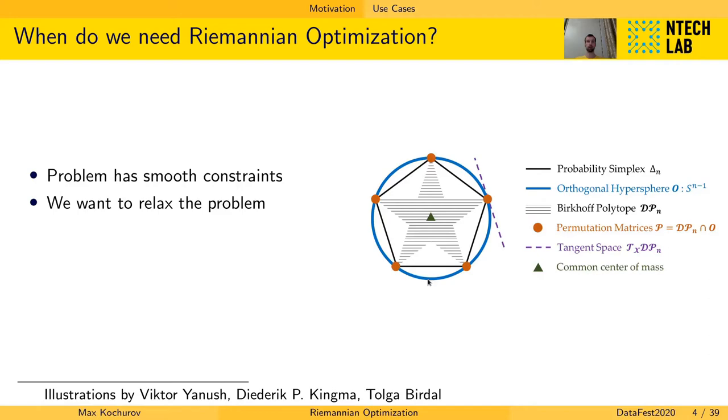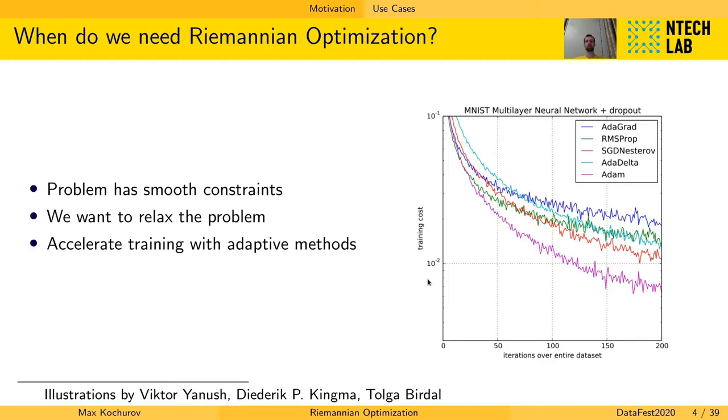Traditional optimization tools that use projective gradients don't really use adaptive terms in full power. But when you use Riemannian optimization and you have a predefined structure, you can use these adaptive methods to their full power. Because you can compute this adaptive term in closed form. You know how to update it.